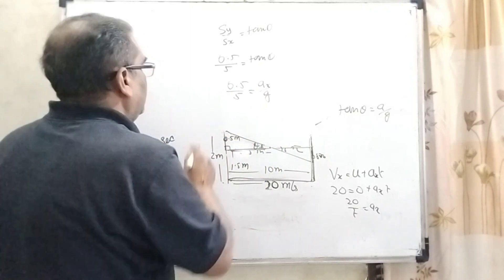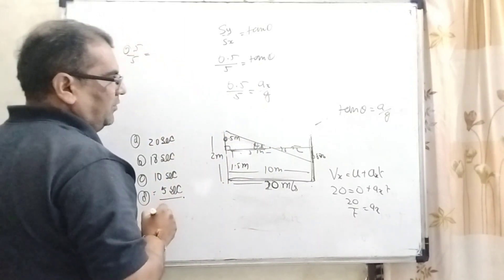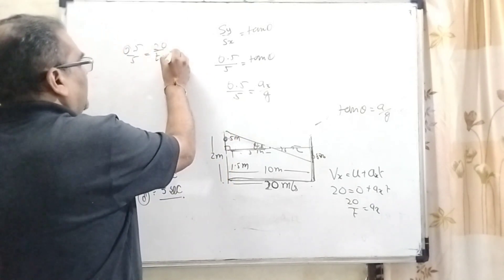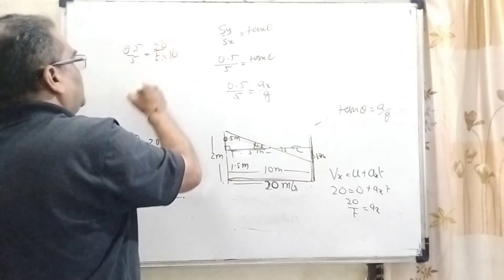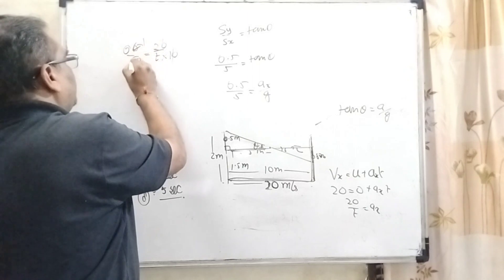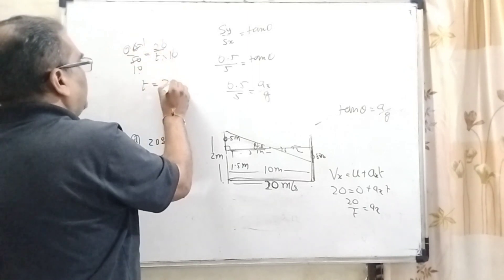So by comparing 0.5 upon 5 equal to A by G. Here A means Ax. So 0.5 by 5 and Ax, what is Ax? That is 20 by T. And G can be written as 10. So this zero cancel out. And remove this decimal, 5 times 5, 5 times 20. So here T equal to 20 second.